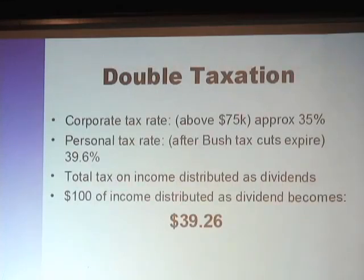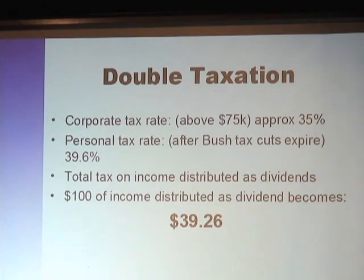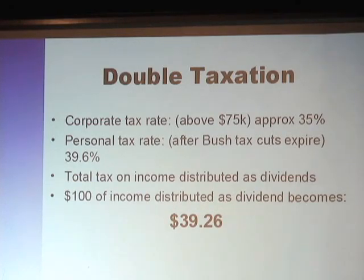You have the double taxation problem. The corporate tax rate above $75K is approximately 35%. The personal tax rate, once certain tax cuts expire, is 39.6%. So $100 of income distributed from the company to the shareholder becomes $39.26, because it's taxed first at the corporate level and then taxed again at the shareholder level.